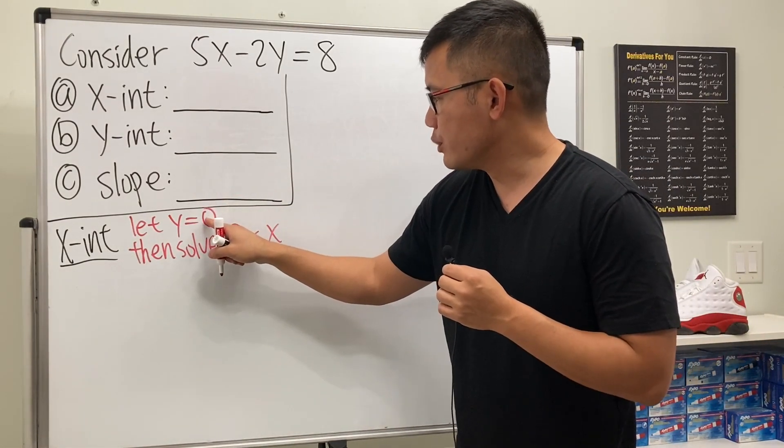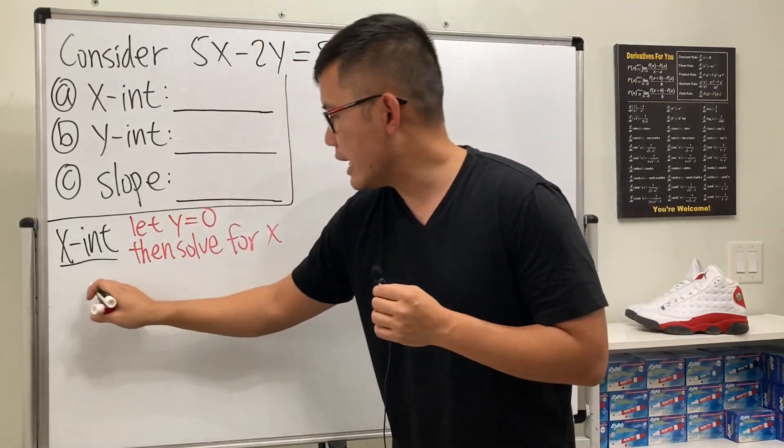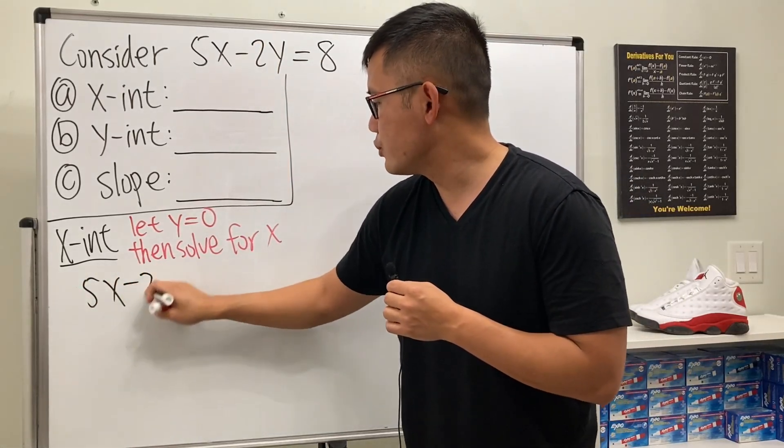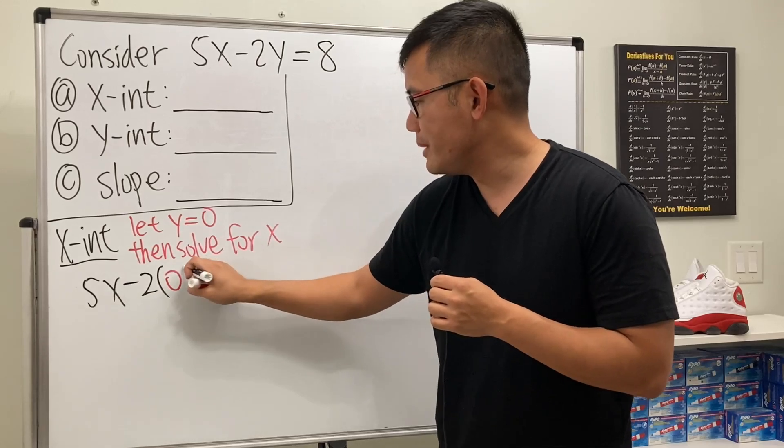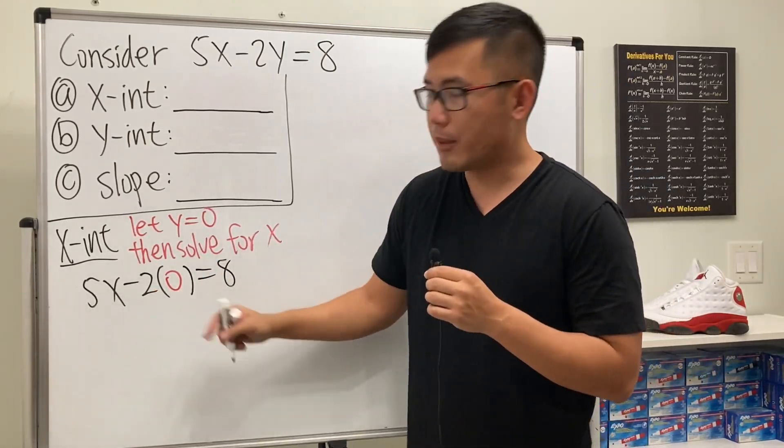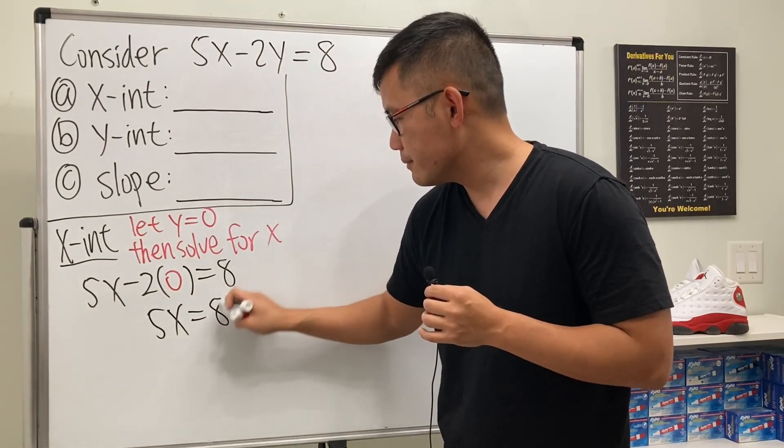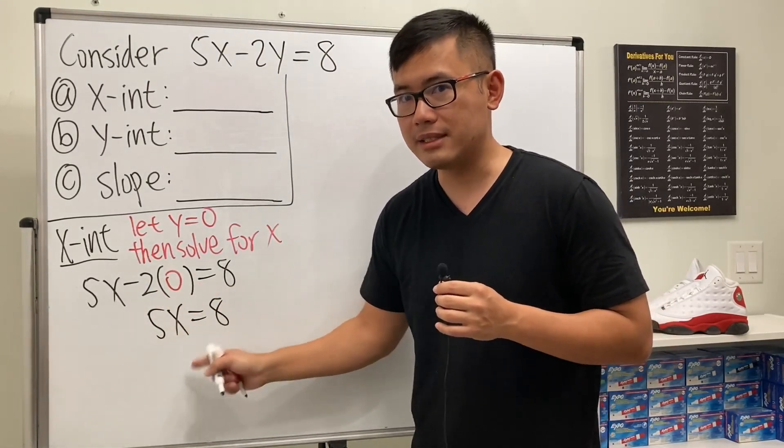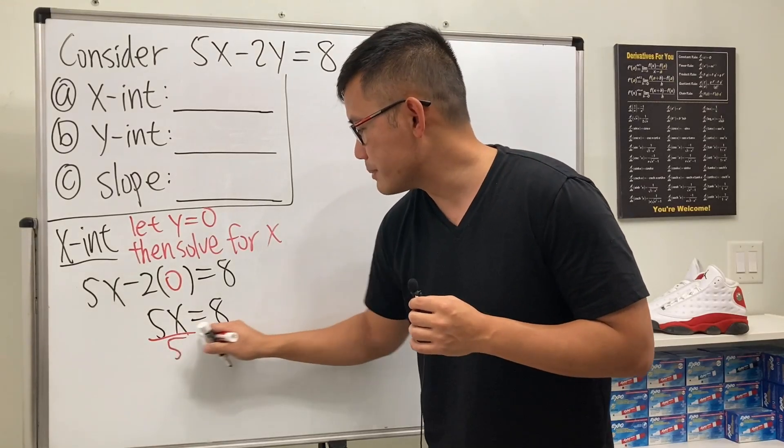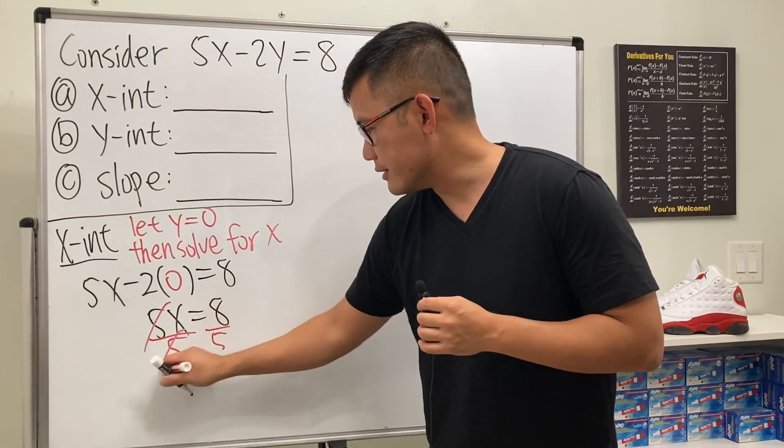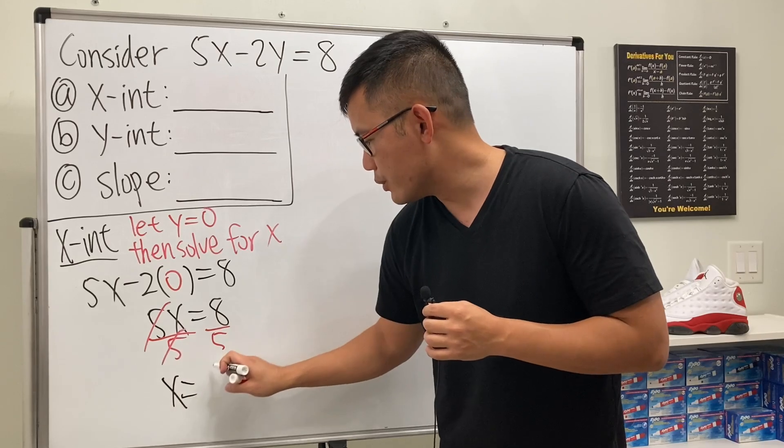Let's put zero in for y. We get 5x - 2(0) = 8, which simplifies to 5x = 8. This means 5 times x equals 8. Therefore, we divide both sides by 5, and we have x = 8/5.